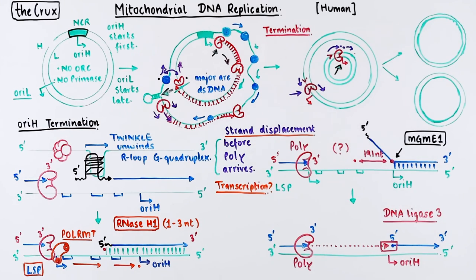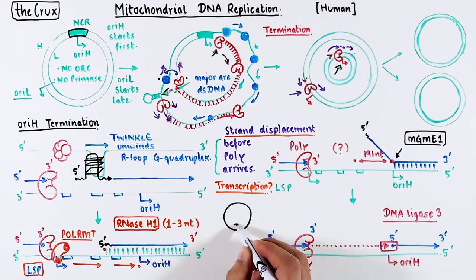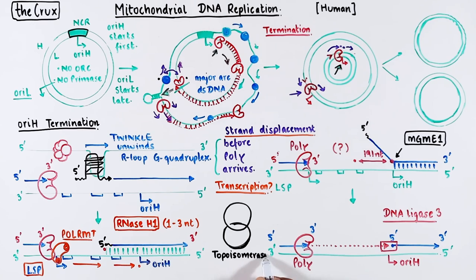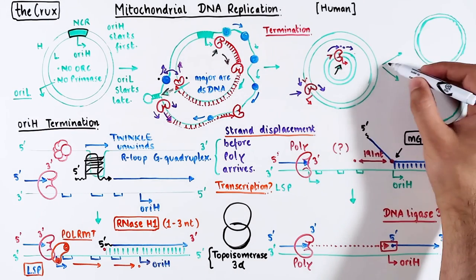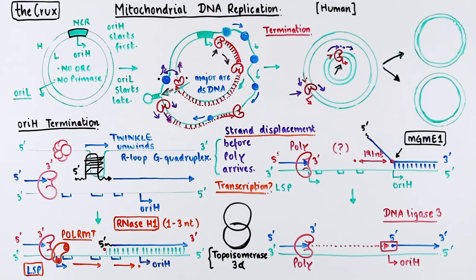When both the H and L strands are replicated, they are problematically entangled in a chain-like structure. Topoisomerase 3-alpha is usually present in mitochondria to fix these problems, which finally results in two independent DNA molecules, completing the replication process.